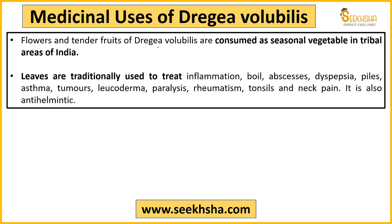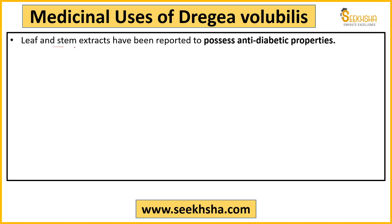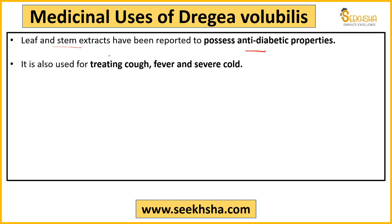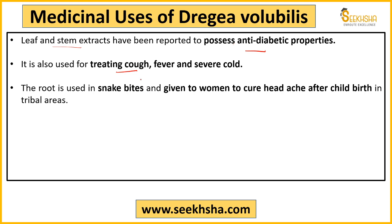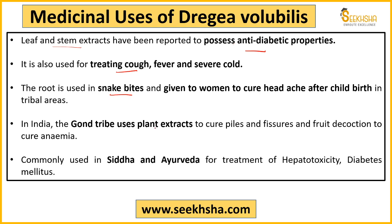Dregea volubilis is used medicinally in tribal areas extensively. Its leaf and stem extracts are widely used for diabetes. It is also used to treat cough, fever, and cold. The roots are used as a cure for snake bites, as a remedy for headaches after childbirth, for controlling piles, and for treating anemia. It is widely used in Siddha and Ayurveda for treating hypertension, diabetes, and other conditions. It is also anti-helminthic.